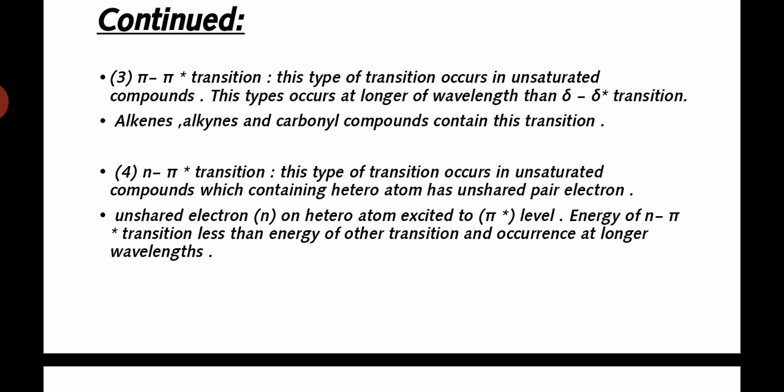Pi to pi star transition. This type of transition occurs in unsaturated compounds. This type occurs at longer wavelength than sigma transition. Examples include alkenes, alkynes, and carbonyl compounds with this transition.